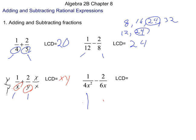For denominators 4x squared and 6x, the least common multiple of 4 and 6 is going to be 12. When looking at the variable part, we want a common multiple of x, and x squared is always going to be the higher of the two powers. So our least common denominator is going to be 12x squared.